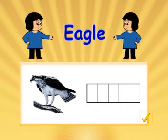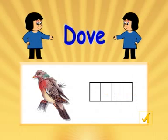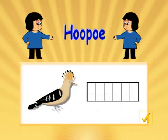Birds. Eagle. E, A, G, L, E. Eagle. Dove. D, O, V, E. Dove. Hoopoe. H, O, O, P, O, E. Hoopoe.